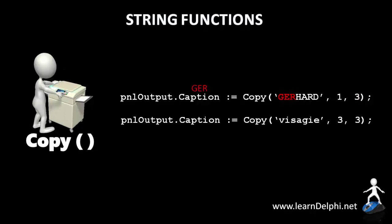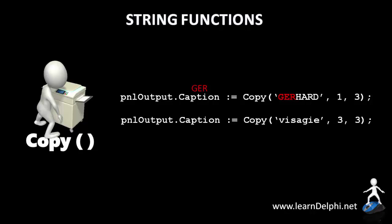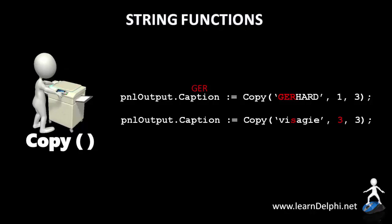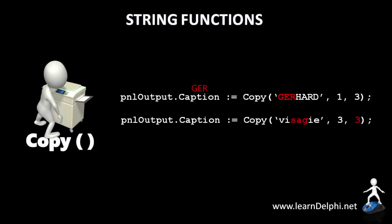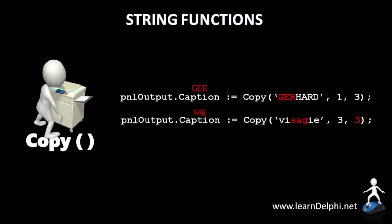Let's look at another example. This statement takes my surname as the input string and passes it to the COPY function. The COPY function must start copying at the third character of the input string — in this case it is S — and must copy three characters in total, including S. In this case, SAG will be copied and the COPY value will then be assigned to the caption of the panel.